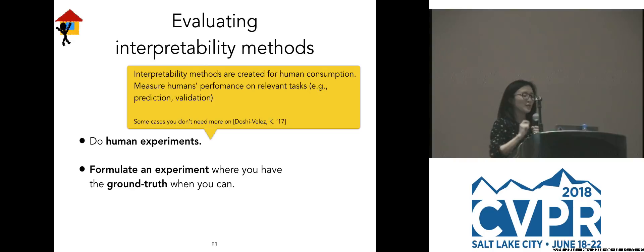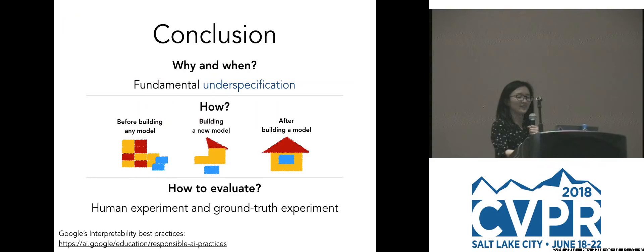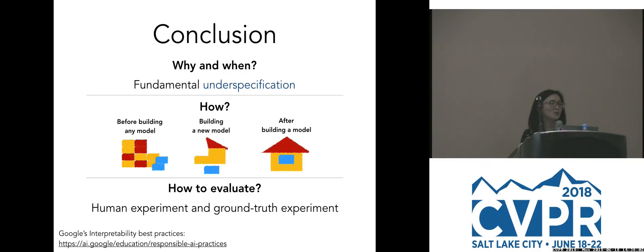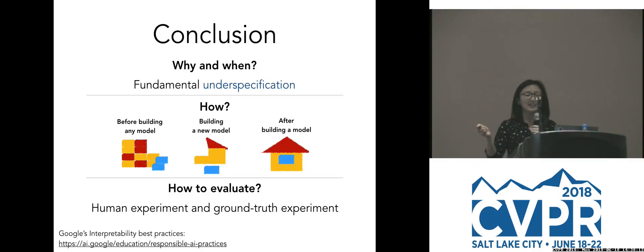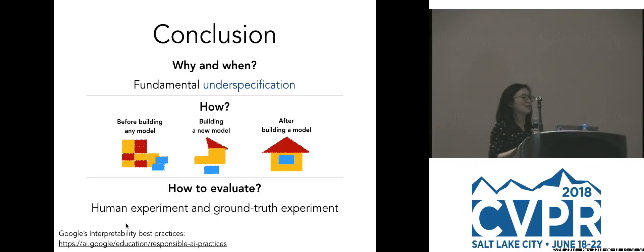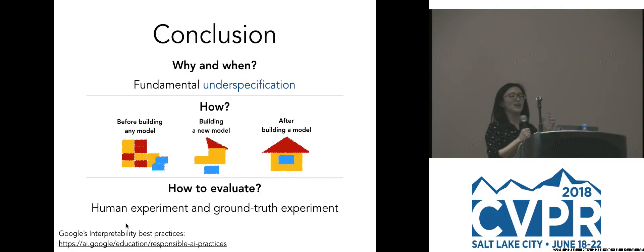So to wrap up: do human experiments, and formulate experiments with ground truth when you can. I went over when and why you need interpretability, and when you might not. How to improve it before building a model, when building a new model, and after building a model. And how to evaluate with human experiments and ground truth experiments. Last but not least, I helped write up Google's best practices for interpretability, published along with the AI principles. This is written for practitioners and I hope it's helpful.